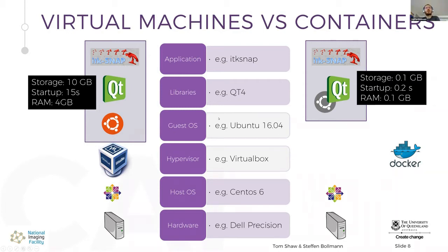The problem with virtual machines is they take a lot of storage because you need to install the whole operating system and everything, even stuff you don't need. You also pay a performance penalty because hypervisor systems originally emulated hardware — you were not directly running on the hardware below. Today hypervisors have gotten a lot better, but virtual machines still require a lot of storage, long startup times of around 30 seconds, and a lot of memory.